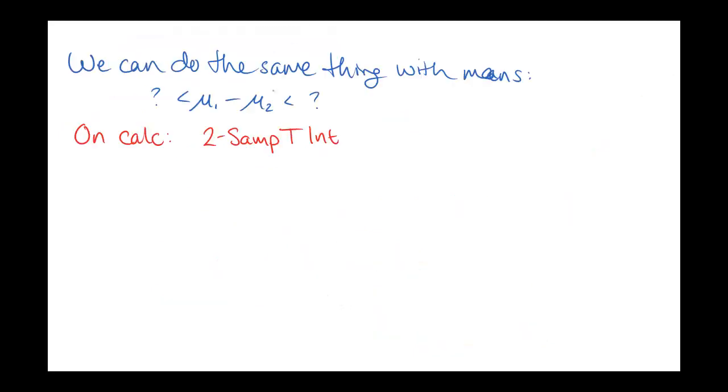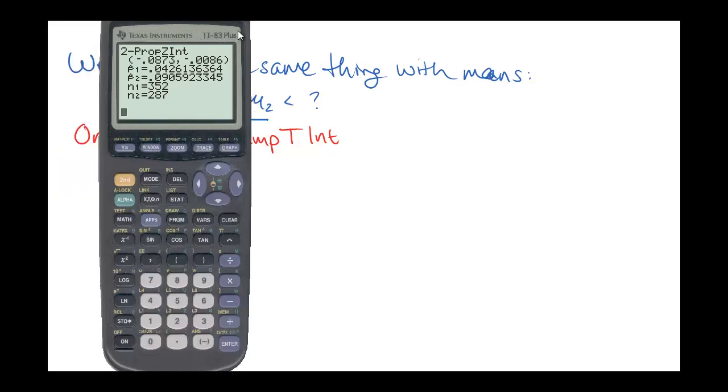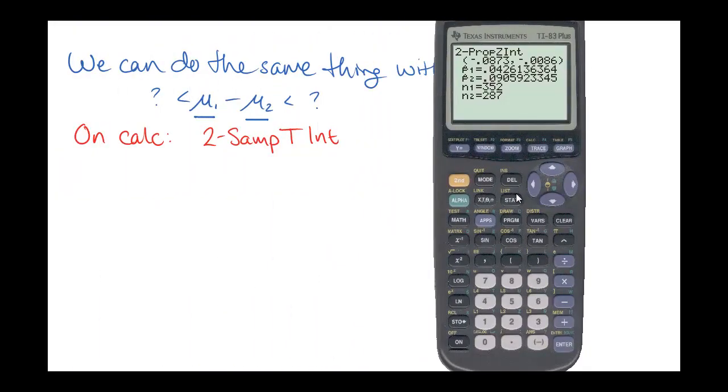We can do the same thing with means. We would be looking at what is the difference between two population means. On the calculator, this is a two sample t interval. So if you go in here, just like with our hypothesis test version, there's an option to put in data, or an option to put in statistics instead. And we can enter same type of information here and figure out what our interval would look like.